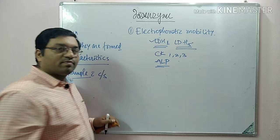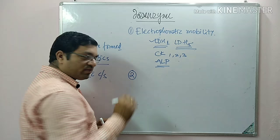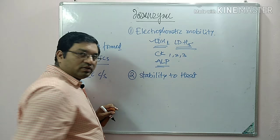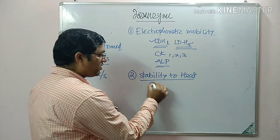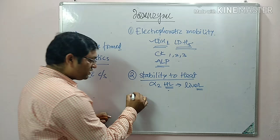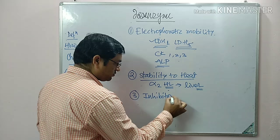The second characteristic is stability to heat. The hepatic variant, the alpha-2 heat-labile variant present in liver, is sensitive to heat. Third, isoenzymes differ in their sensitivity to various inhibitors — for example, tartrate-labile acid phosphatase.